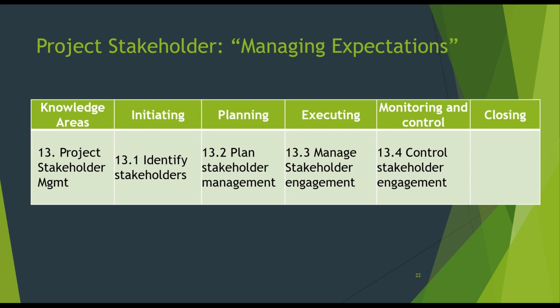Project stakeholder management is the last knowledge area in the PMBOK 7th edition. The project stakeholders play an important role in determining the success and failure of the project. Getting stakeholders to take part in the project from the beginning is crucial, because they are the ones who decide on what changes will meet their requirements. If the project manager fails to involve them at the initial stage, changes set forth by the stakeholders at a later stage will hamper the quality and value of the project. The processes are: identify stakeholders, plan stakeholder engagement, manage stakeholder engagement, and monitor or control stakeholder engagement.